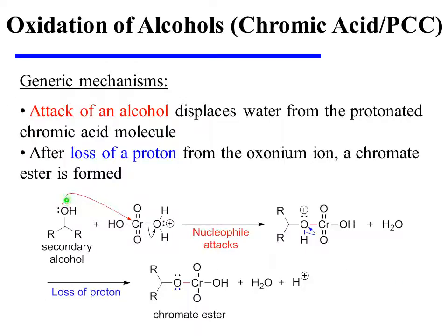The attack of an alcohol then displaces water from the protonated chromic acid molecule. After loss of a proton from the oxonium ion, a chromate ester is formed.